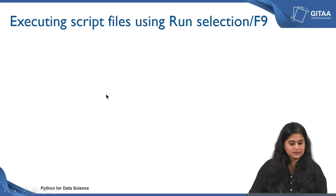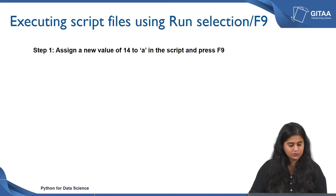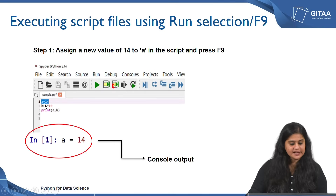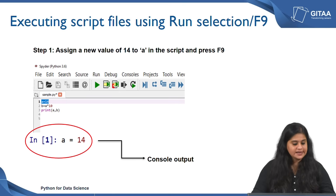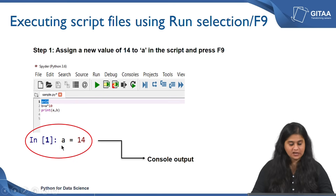Now let us see how to execute few pieces of code using the Run Selection option or the F9 command from the keyboard. To my earlier code I am assigning a value of 14 to a, and I am selecting the line and then pressing F9. Once you select the line and press F9 you will see a corresponding output being displayed in your console — it says a is equal to 14.